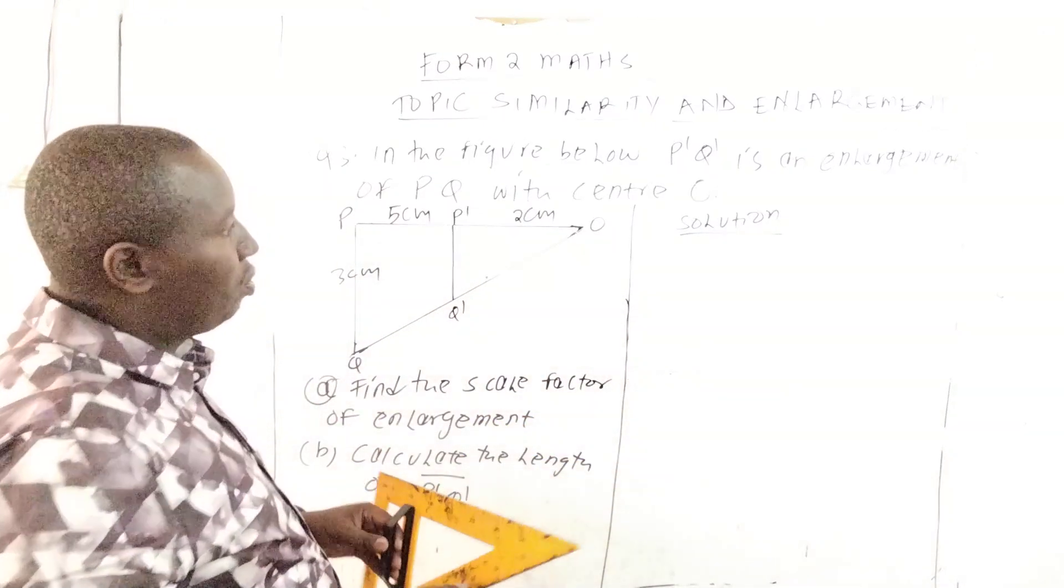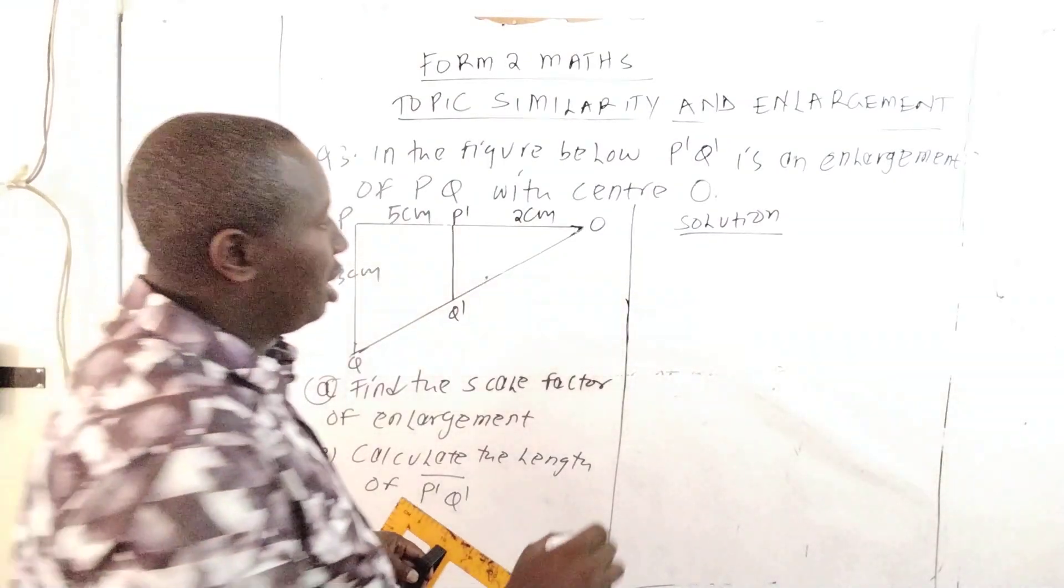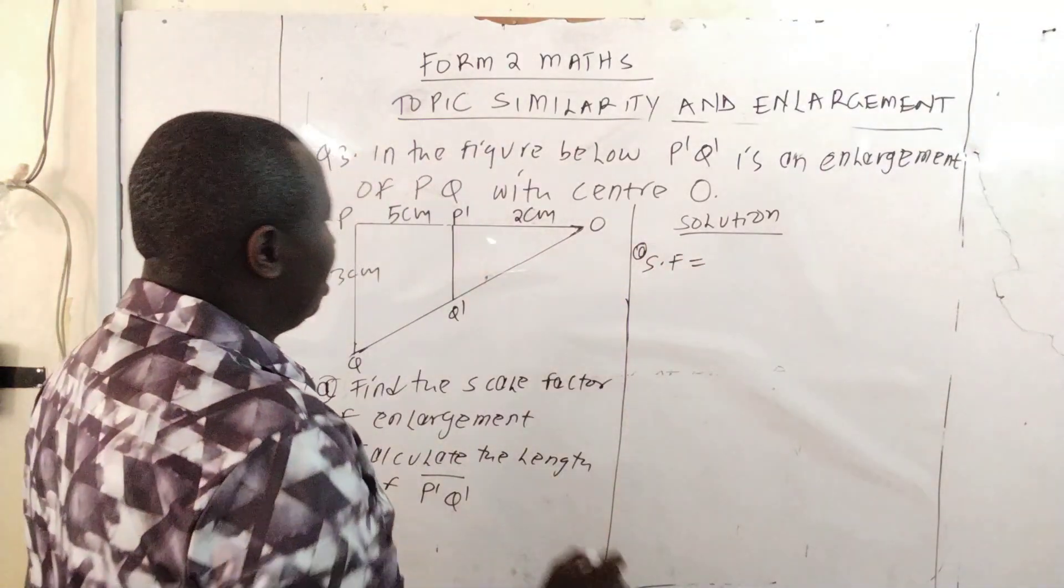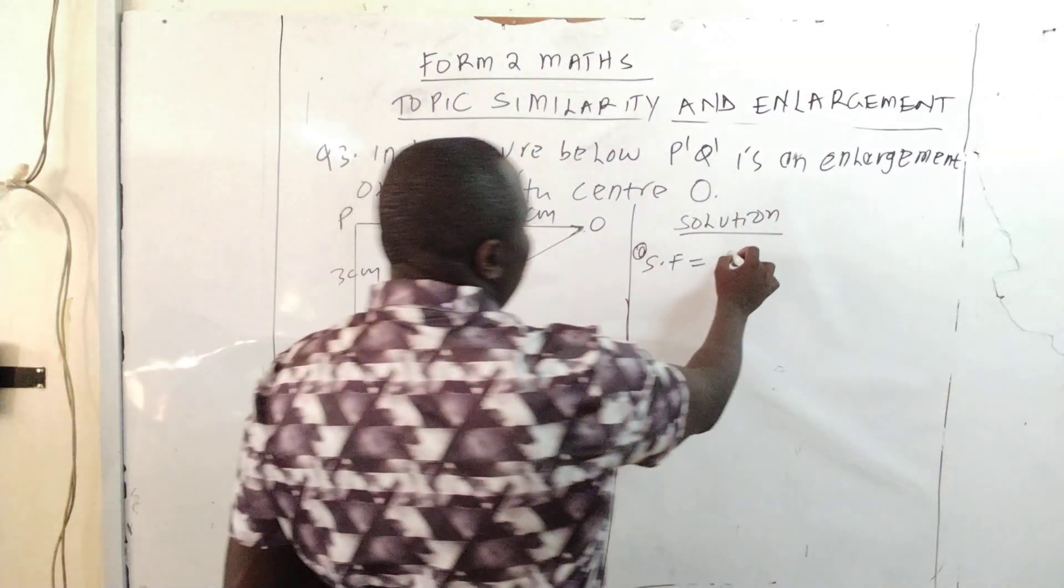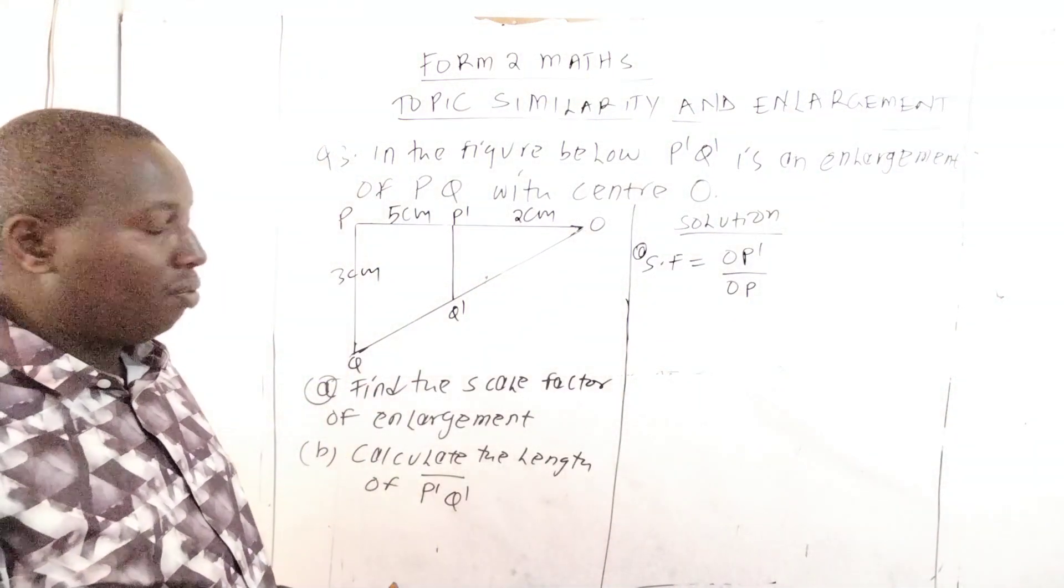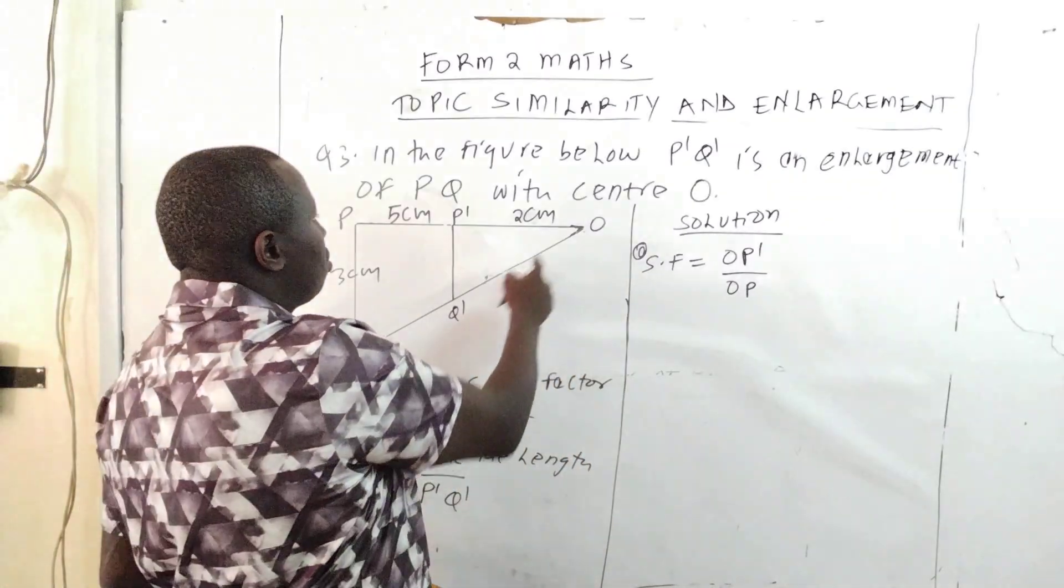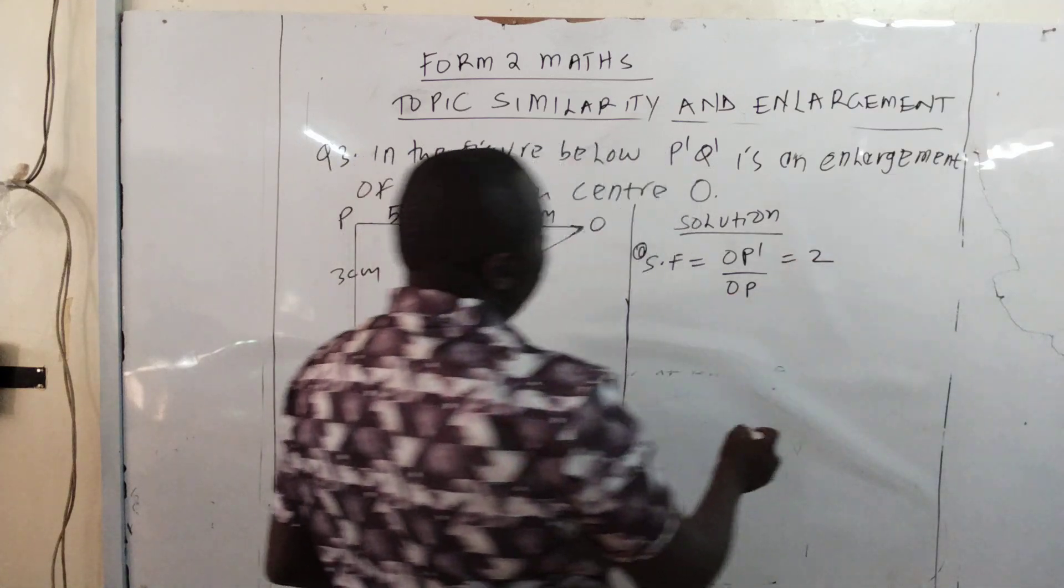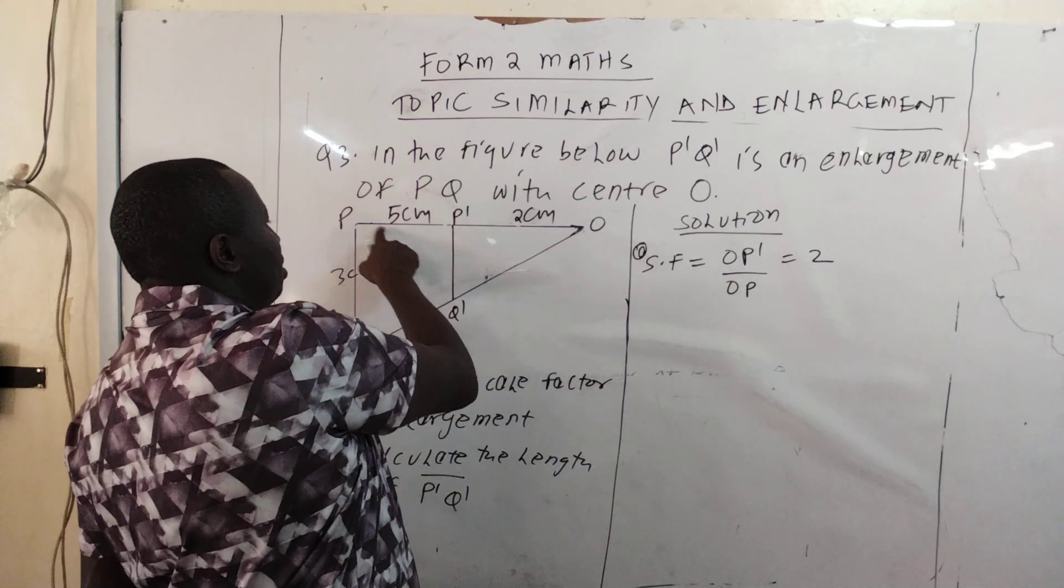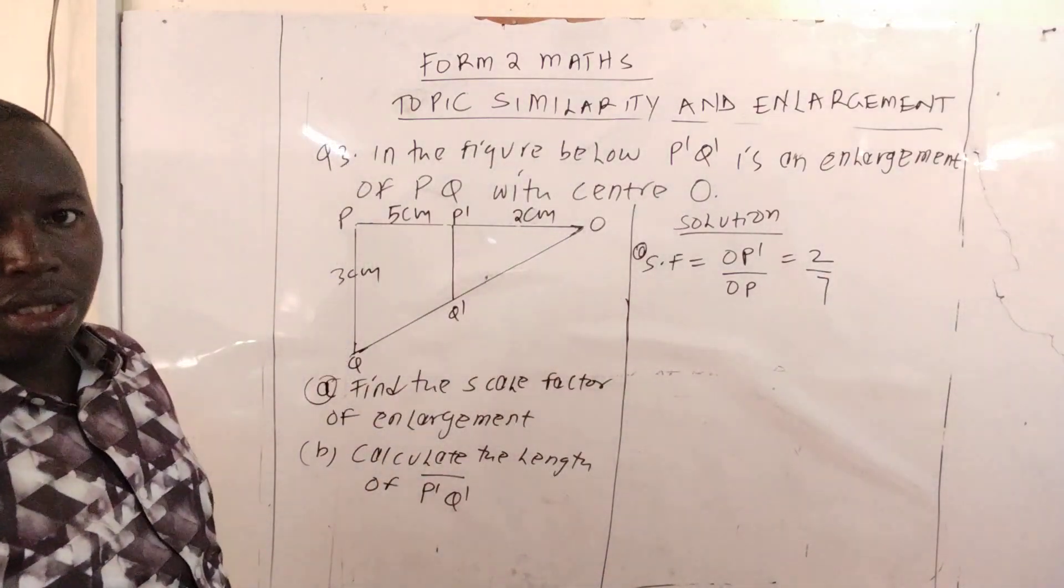What you want to find is the scale factor of enlargement. The scale factor for part A is the distance OP1 over OP - image over object distance from the center of enlargement. From O to P is 2, and P to P1 is 5, so OP1 is 7. The scale factor of enlargement is 2 over 7.